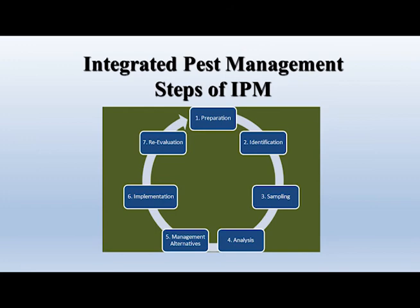The next step is how to sample for different insect pests. There are different ways of sampling and throughout this course we sample certain pests different ways. Once you sample, you have to take and analyze that data. In scouting for pests we determine whether you're at an economic threshold — the point at which you should control a pest before it causes damage. After that, you need to know what the management alternatives are for that pest.